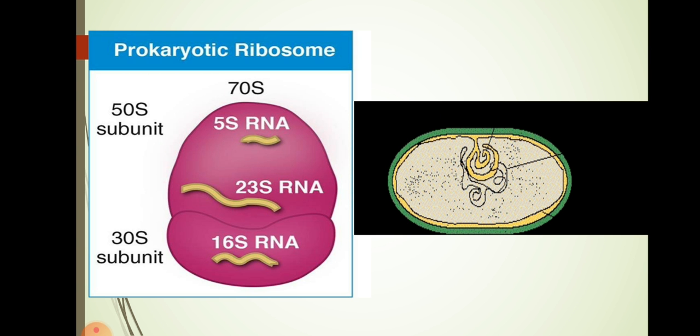Here are the structure of a prokaryotic ribosome which is of 70S type. It consists of 50S subunit and 30S subunit. On the other side we can see a mesosome.